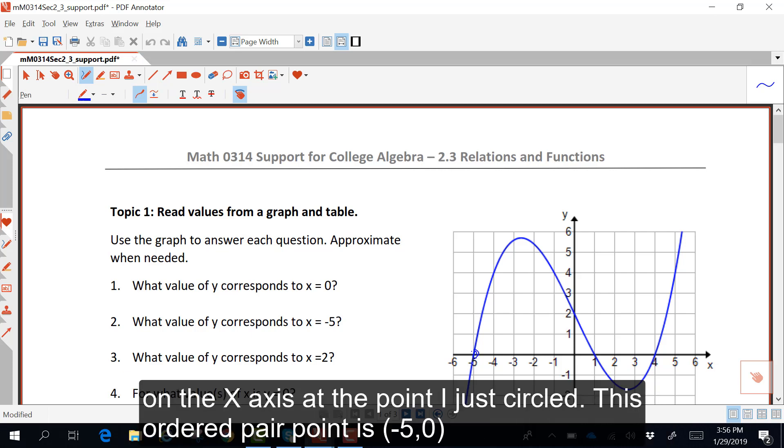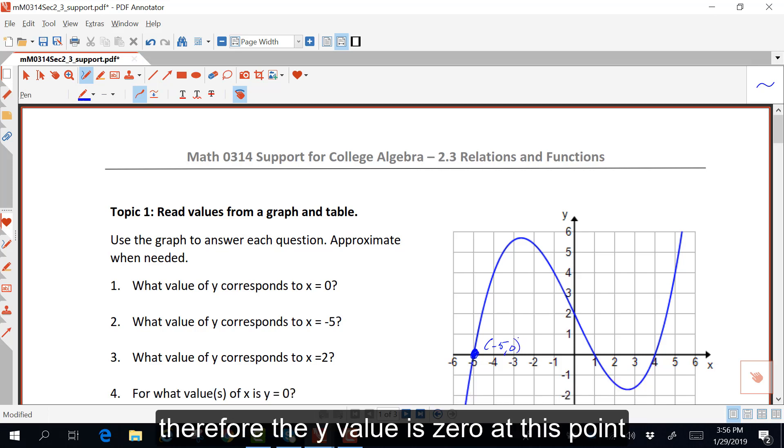Well, x is negative 5 on the x-axis at the point which I just circled. This ordered pair point is negative 5 comma 0. Therefore, the y value is 0 at this point.